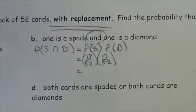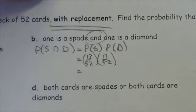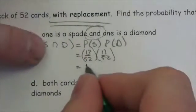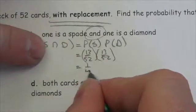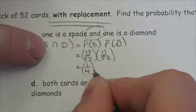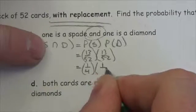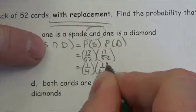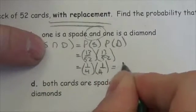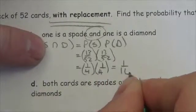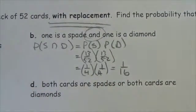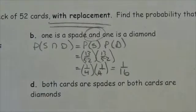Because we put the card back, we're right back to where we started. This is going to be one quarter multiplied by one quarter, so the result is 1/16. That's the probability of getting a spade and then a diamond in that order.